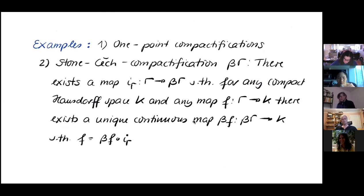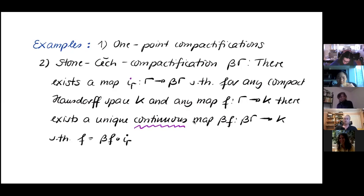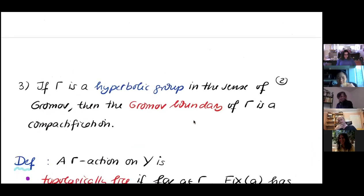We could also use a Stone-Čech compactification of the group. It is a compact space with the following property: there exists a map, call it i-gamma, from gamma into this compactification, such that for any compact Hausdorff space K and any map F from gamma into K, there exists a unique continuous map BF from the Stone-Čech compactification of gamma into K, such that F is the composition of this inclusion of gamma into the Stone-Čech compactification and BF. In other words, any map into a compact space factors through a continuous map from the Stone-Čech compactification into K. This is a beautiful compactification, however it's very hard to understand and probably way too big to be of use in studying the topology of a group.